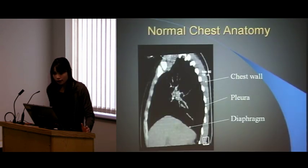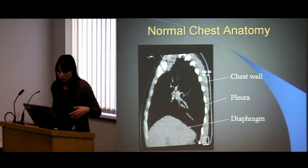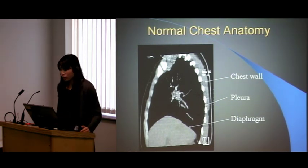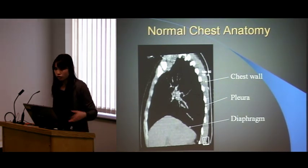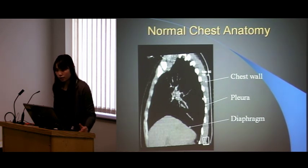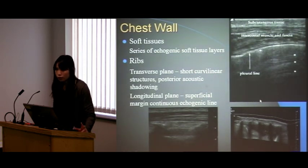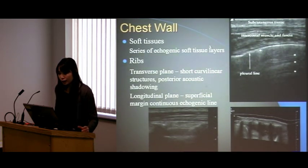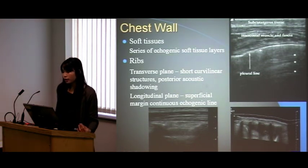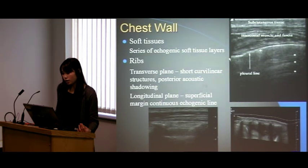Normal chest anatomy: you've got your chest wall, which includes the soft tissues — your skin, your intercostal muscles — and you see this pleural line. You've got your soft tissue layers: they're layers of echogenic soft tissue. You've got your skin, subcutaneous tissue, and slightly darker intercostal muscles and fascia, and then you see the pleura as an echogenic line.